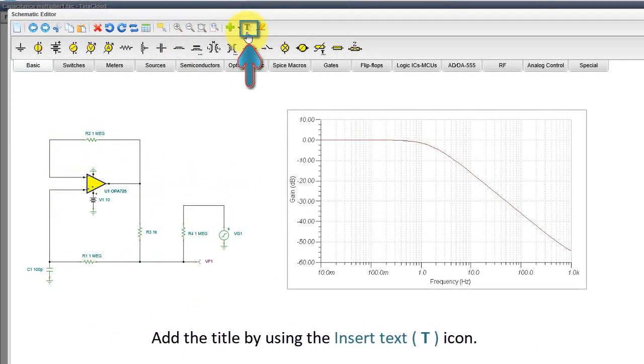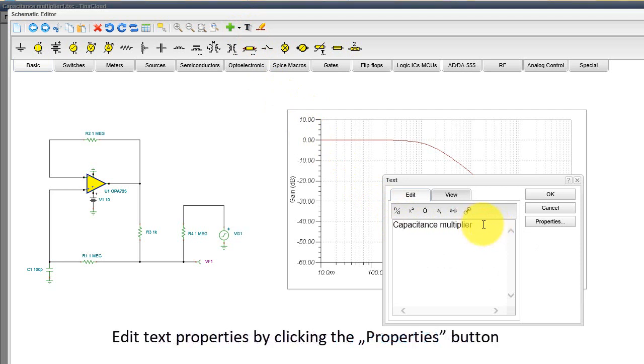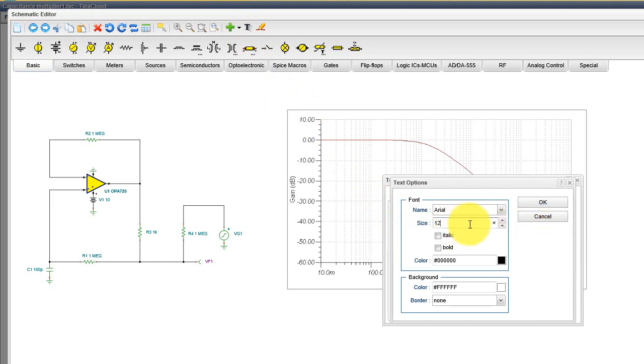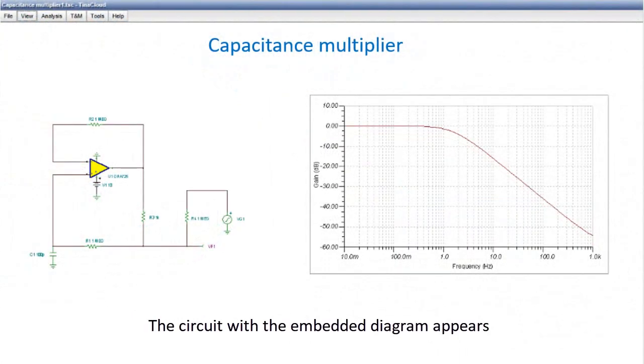Add the title by using the Insert Text icon. Edit Text Properties by clicking the Properties button. When you finish editing, press OK. Save the circuit by pressing the Save button. The circuit with the embedded diagram appears.